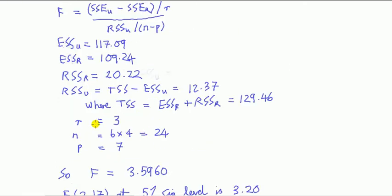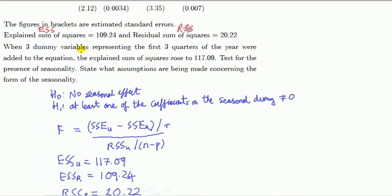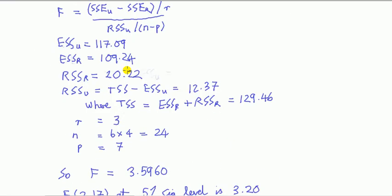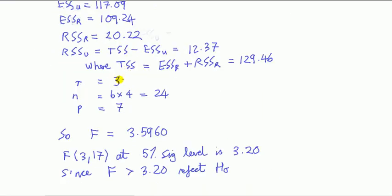R is the number of restrictions we're testing. We're testing here that three dummy variables are all equal to zero. So that's three coefficients. Three coefficients each is zero, so it's three constraints.